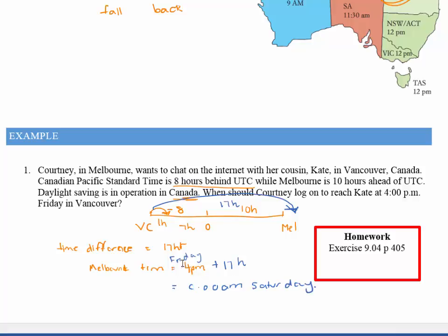So thinking about it: 4 p.m. adding on 12 hours makes it 4 a.m. on Saturday, and then adding on the rest of the numbers gets us to 9 a.m. There's a lot to think about here, but you shouldn't have any problems — and if you do, you know what to do.